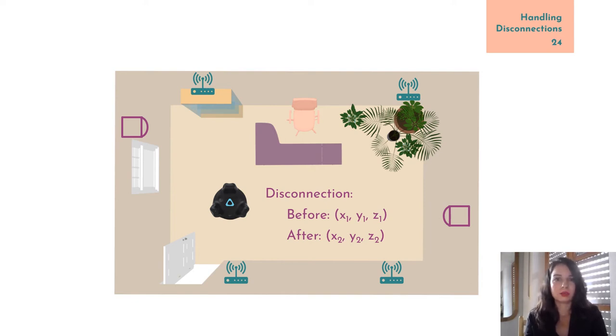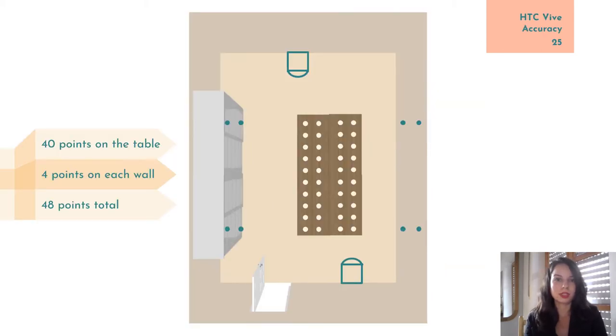Fortunately, we can at least detect when a disconnection occurred since the tracker becomes unreachable and we get null locations from the system. If this happens during a recording, we can discard all measurements acquired after the disconnection. And for the next recording, we will repeat the first two steps. This will solve the problem of the changing coordinate system.